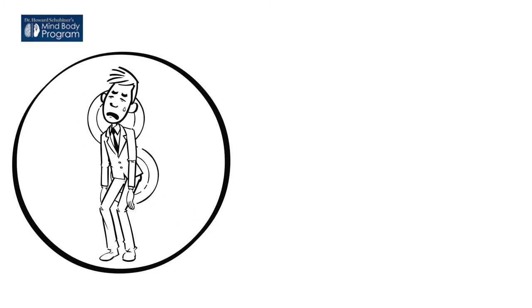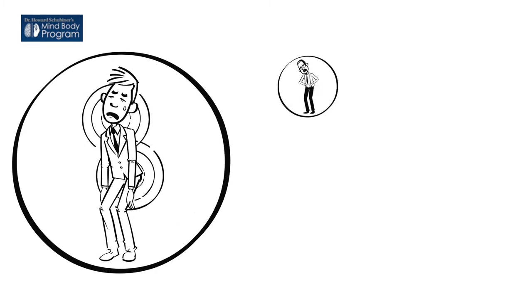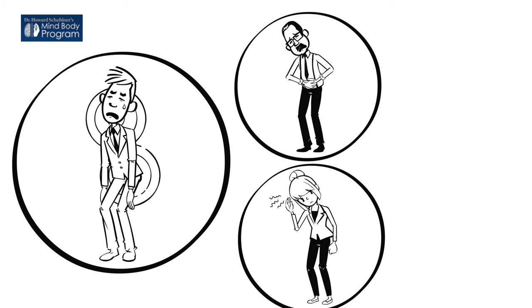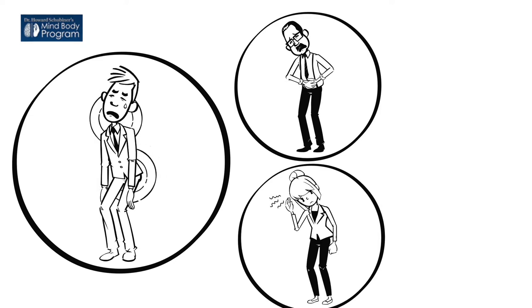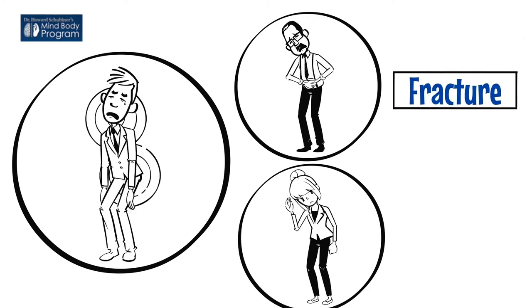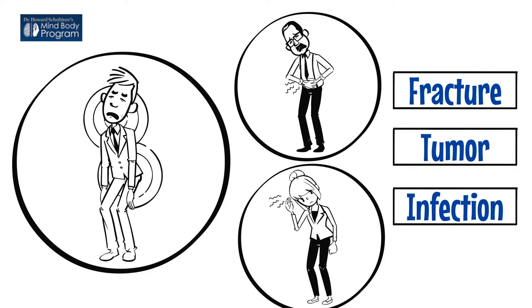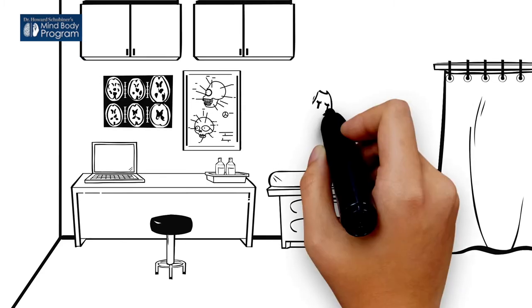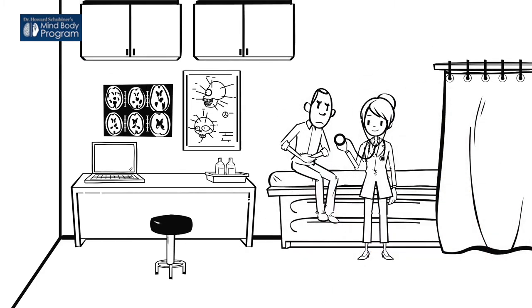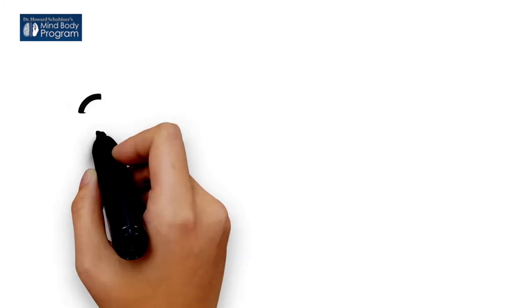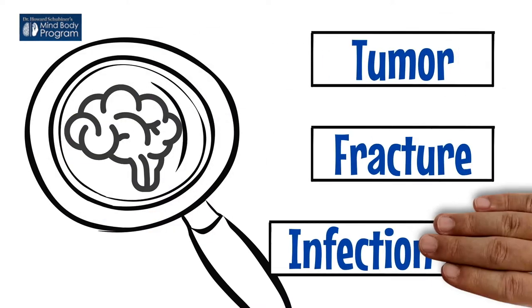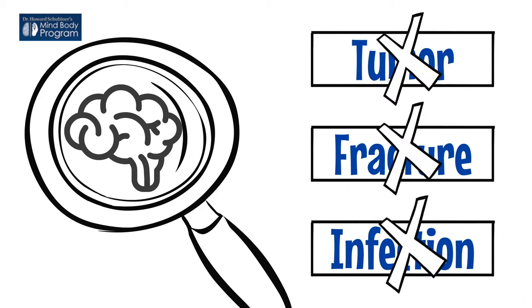If you have a pain, like a back or neck ache, or a stomach ache or headache, you want to make sure that this is not caused by a structural problem such as a fracture, a tumor, an infection, or some other major disease. So it is always necessary to see your doctor to get checked out. In general, if there is no evidence for a tumor, a fracture, an infection, or some significant structural problem, it is likely that the pain is not due to a structural problem.